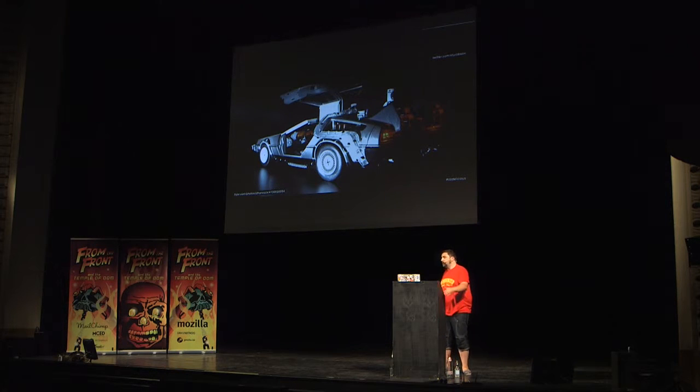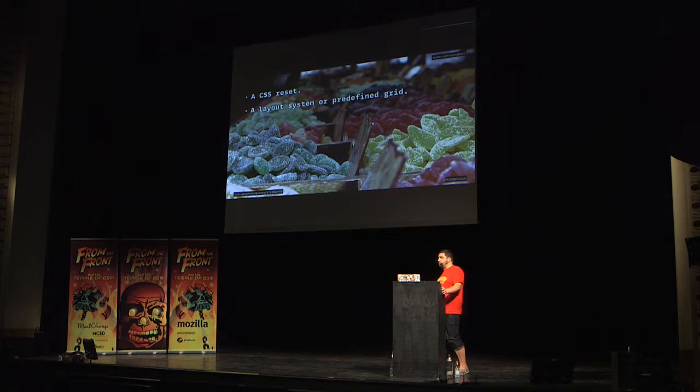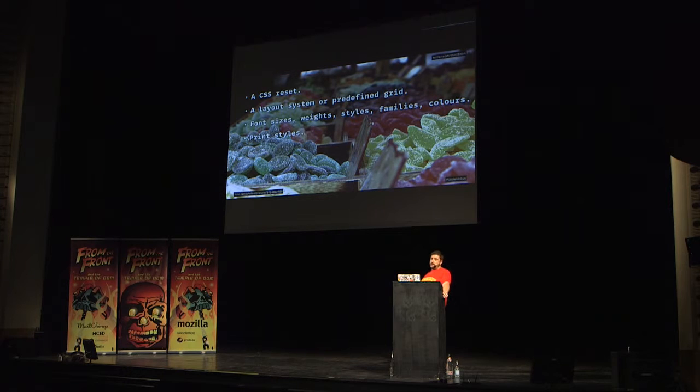If we go back in time to 2008, at An Event Apart in San Francisco, Eric Meyer gave a talk on the lessons of CSS frameworks. He discussed the 960 grid system by Nathan Smith, Blueprint, and the Yahoo UI library, going through these systems plus another six or seven and creating a list of what was in them. He found that frameworks contained a CSS reset, a layout system or predefined grid, some generic predefined font sizes, weights, styles, families and colors, a print stylesheet, some generic naming conventions, an HTML page of various complexity, and potentially some JavaScript or jQuery.